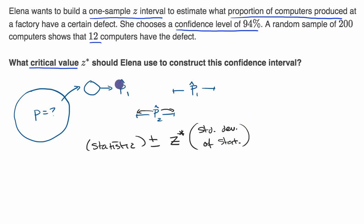In this particular situation, our statistic is p hat from this one sample that Elena made, plus or minus z star. We're going to think about which z star, because that's the question, the critical value.